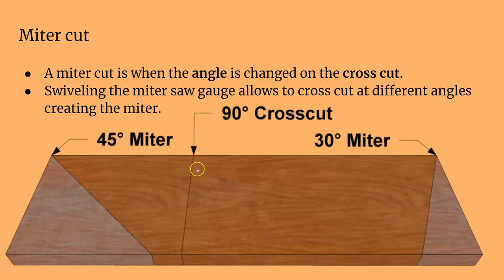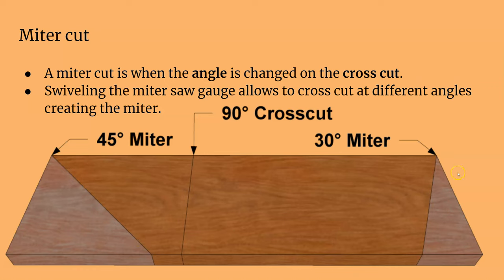Then you have your miter cuts. A straight cross cut right across the board at a 90 degree angle is technically a 90 degree miter. Half of 90 is 45 — the second most common cut. 45 degree cuts are used around doors and pretty much anything, because it's half of 90 and that creates a right angle.